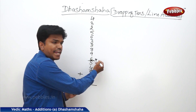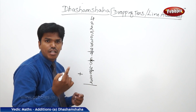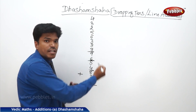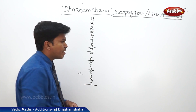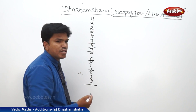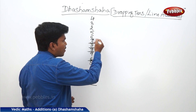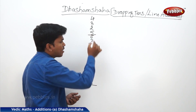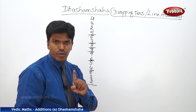2 plus 6? 8. 8 plus 9? 17. So again drop a 10. Remaining is 7. 7 plus 7? 14. Again more than 10, so drop a 10. Remaining is 4. 4 plus 8? 12. Again more than 10, so drop a 10. Remaining — you tell me — 1 only.